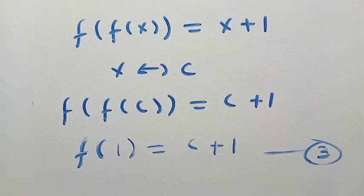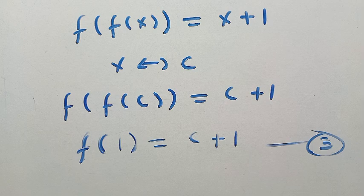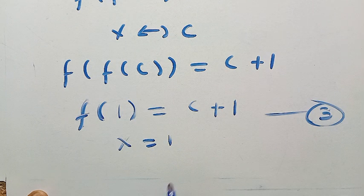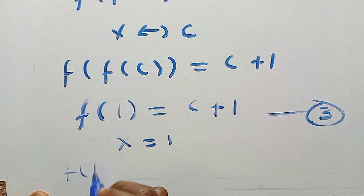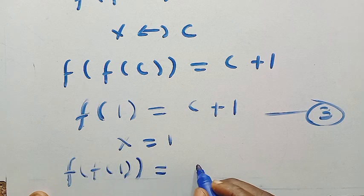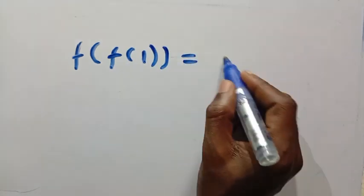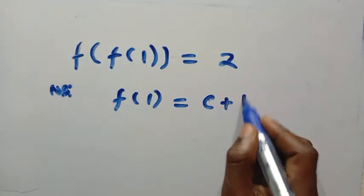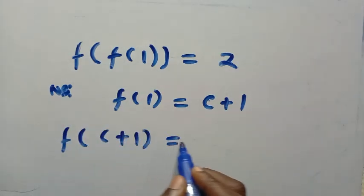Now let x equal one. In the original equation f of f of x, we get f of f of one equals one plus one, which gives us two. So f of f of one equals two. But f of one equals c plus one from equation three, so replacing that we have f of c plus one equals two.